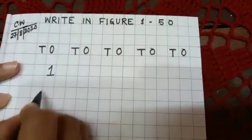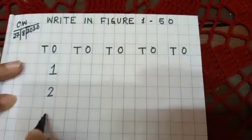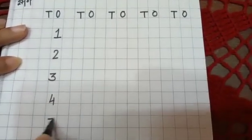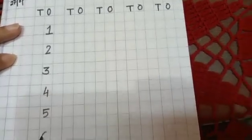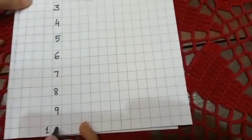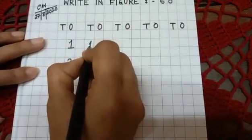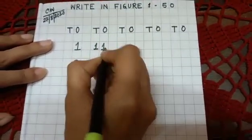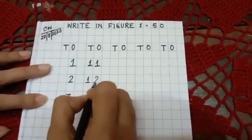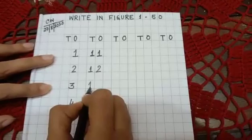1, 2, 3, 4, 5, 6, 7, 8, 9, 1-0, ten. Then 1-1, eleven, 1-2, twelve, 1-3, thirteen, 1-4, fourteen, 1-5, fifteen, 1-6, sixteen, 1-7, seventeen, 1-8, eighteen, 1-9, nineteen.